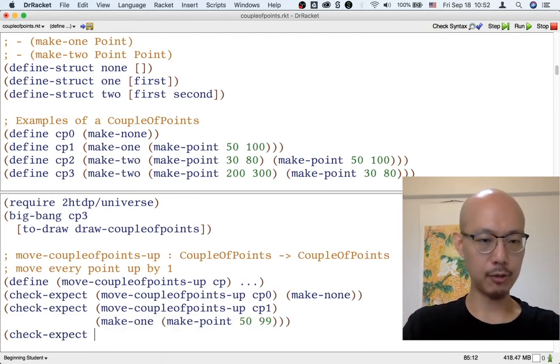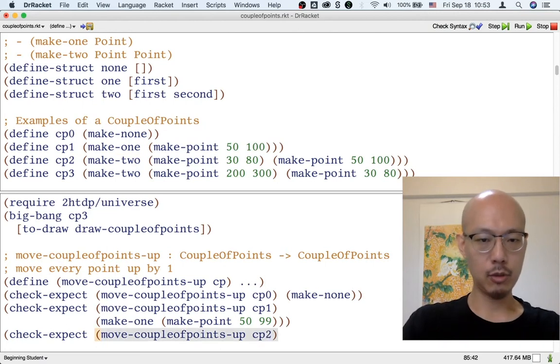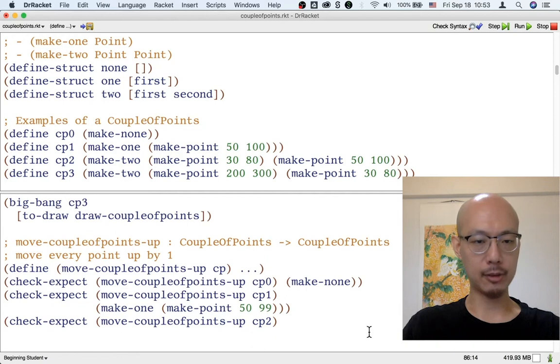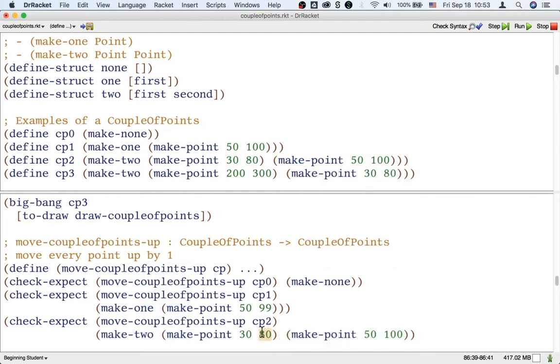Let's write a third example for the final kind of input. So cp2 is a fine example of that kind, the kind made using make2. So what should that produce when passed to move a couple points up? Well, we should have every point, and there are two of them, move up by one. So 80 becomes 79, and 100 becomes 99.